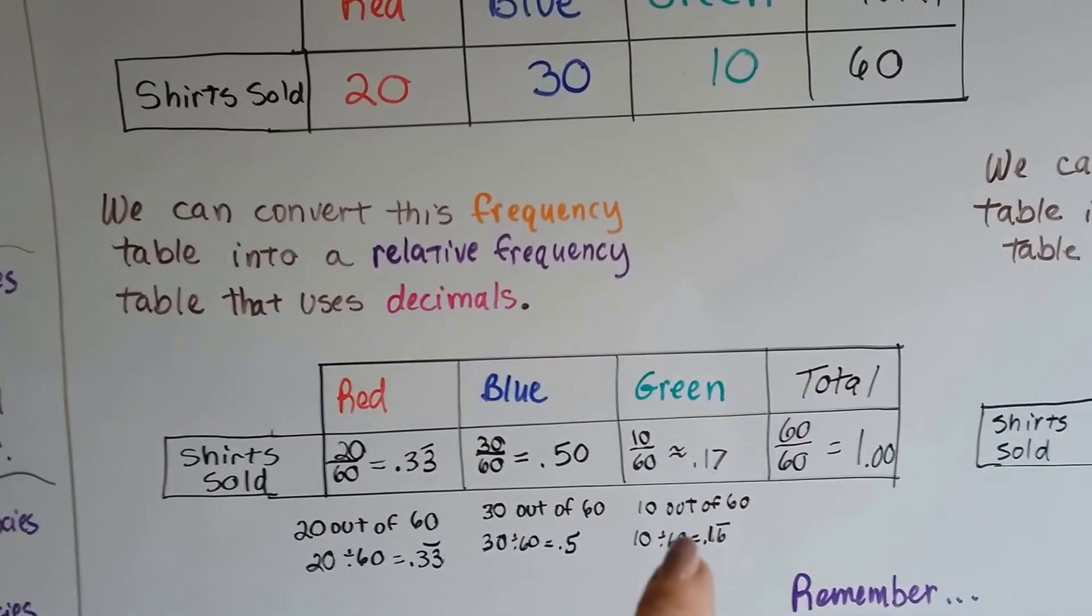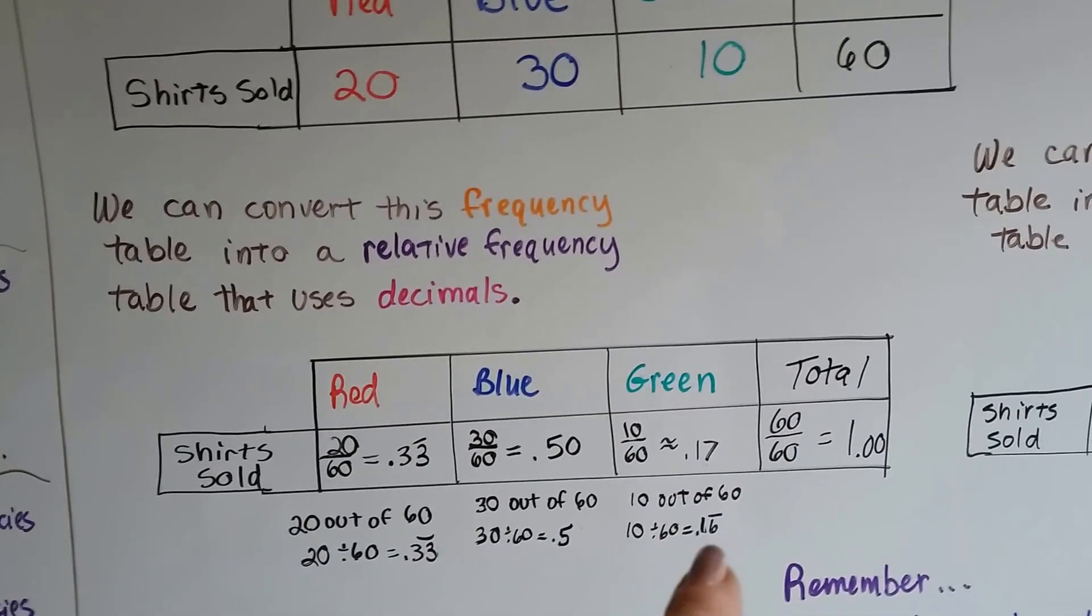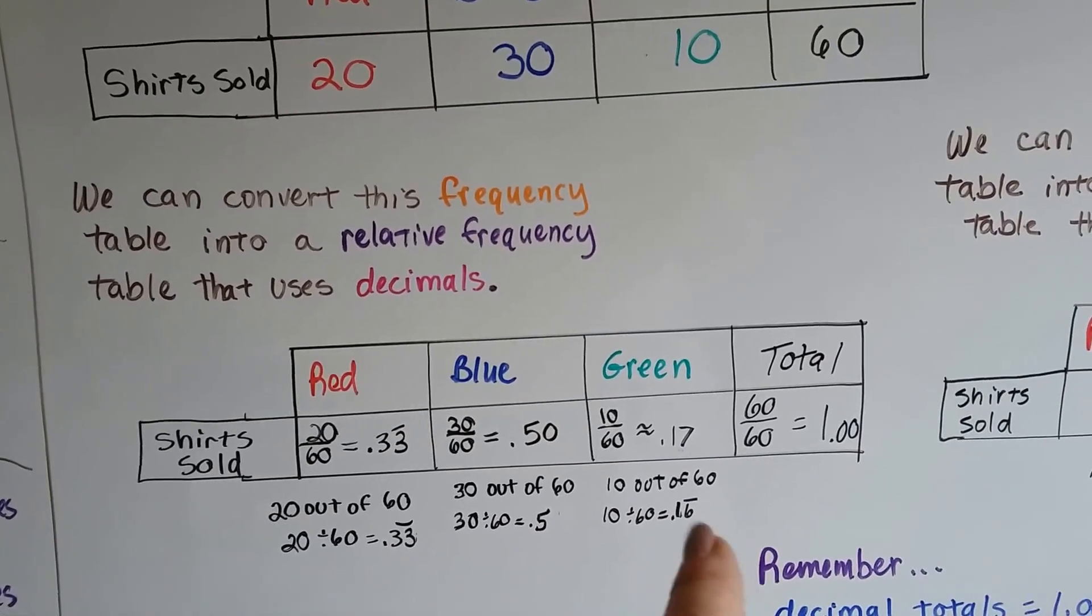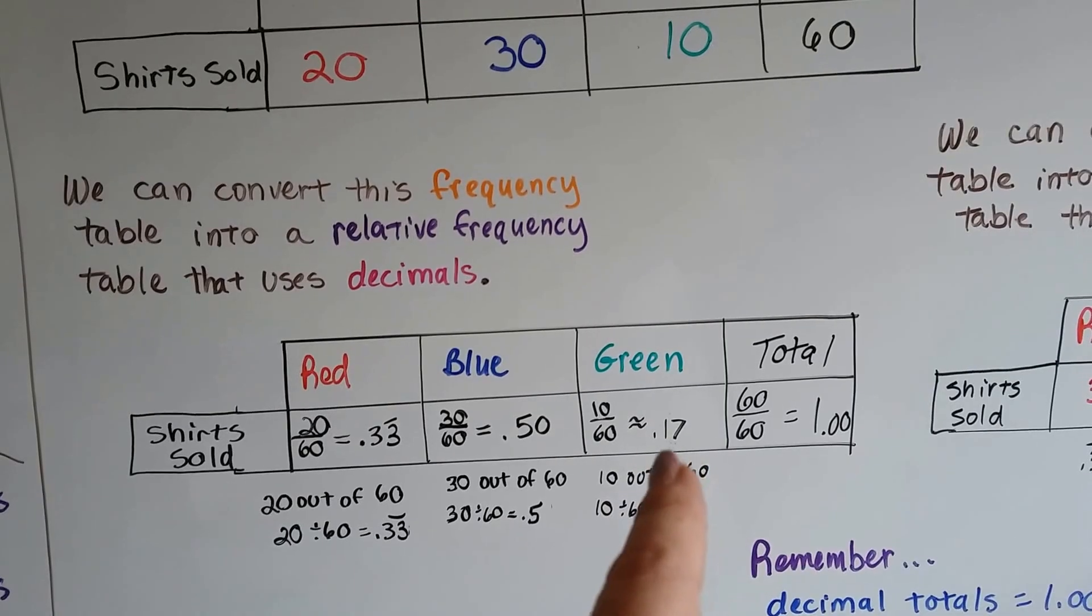And 10 out of 60 is 10 divided by 60. That's .16. And the 6 repeats quite a ways. And then there's a 7 at the end. So I'm just going to round it to approximately .17.